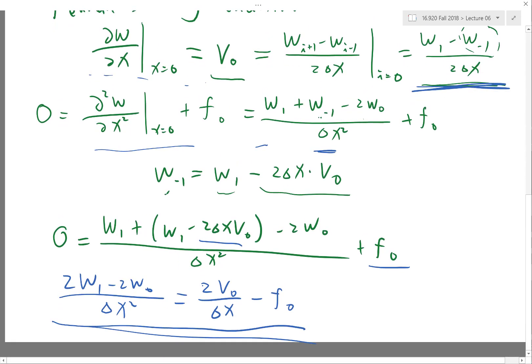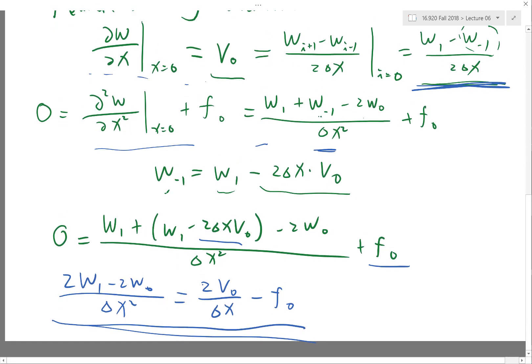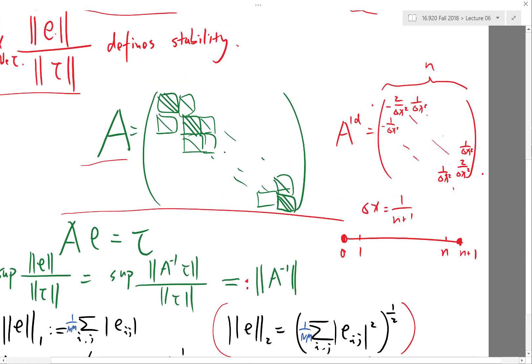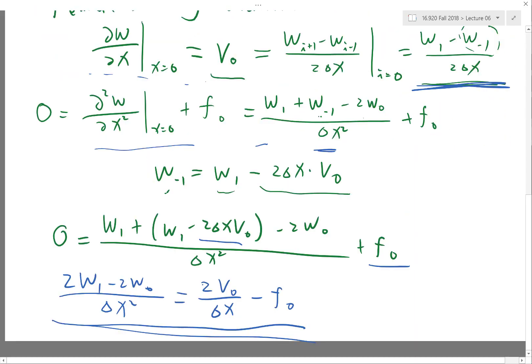So now, look at the matrix. How would that be different? First of all, we have one more row above this, right? Because now we have W0 as a variable, we have one more row and one more column on the matrix because the one more column is because we have an additional unknown W0. The one more row is because we have an additional equation. This equation is not there before.